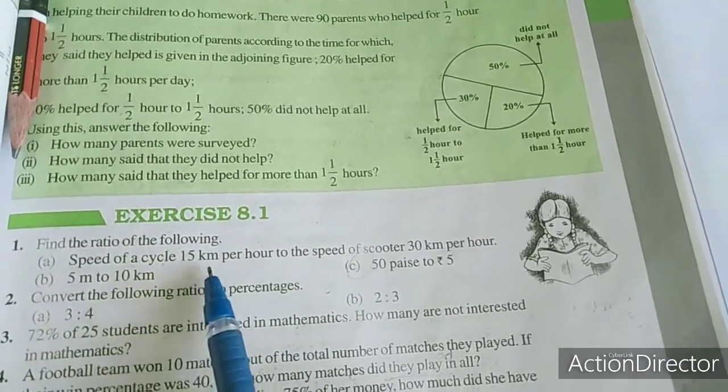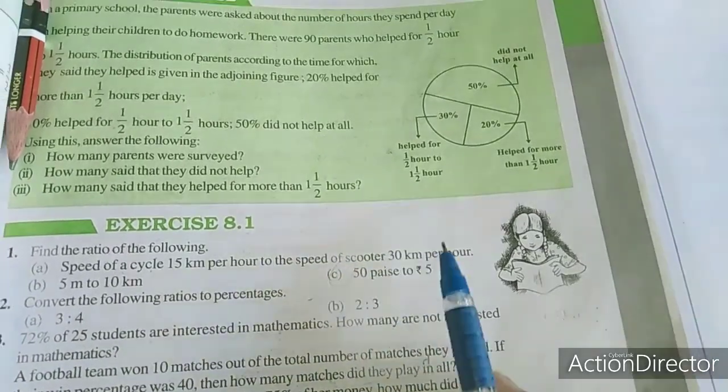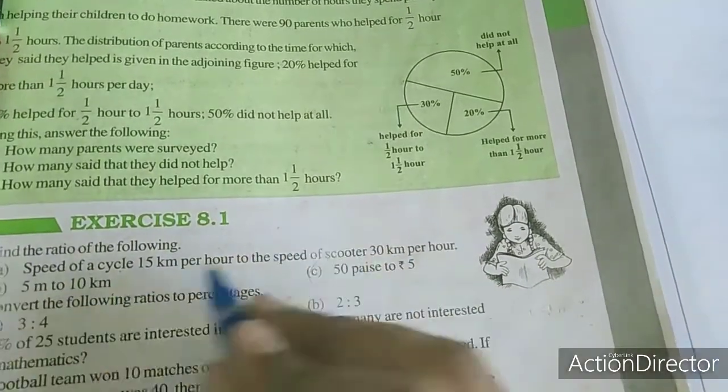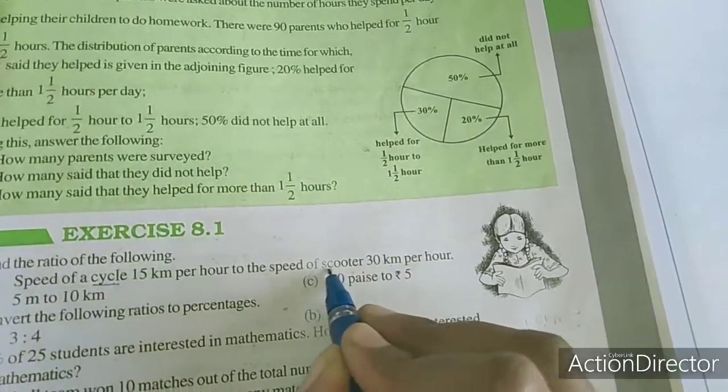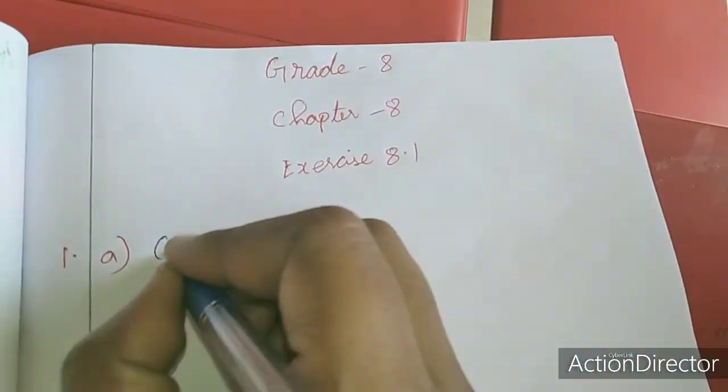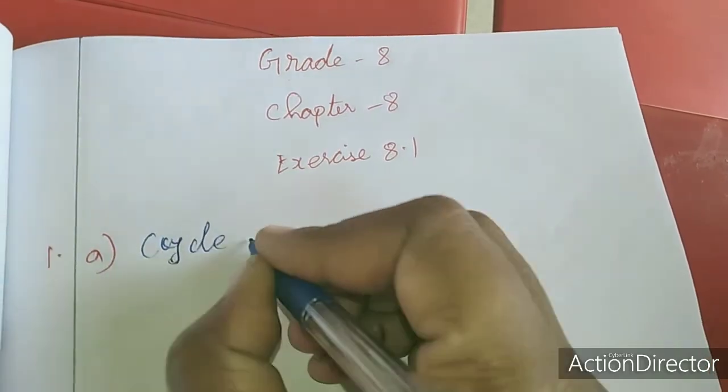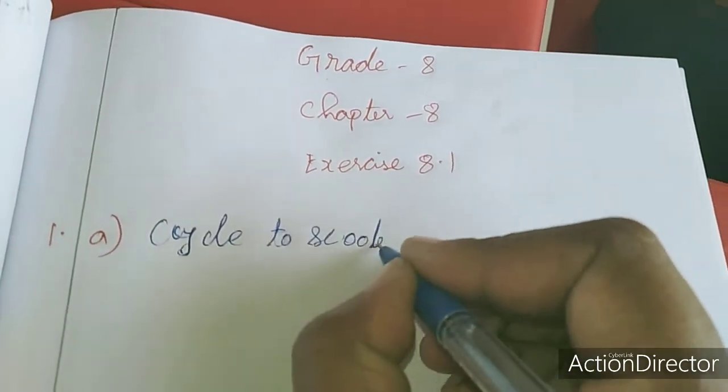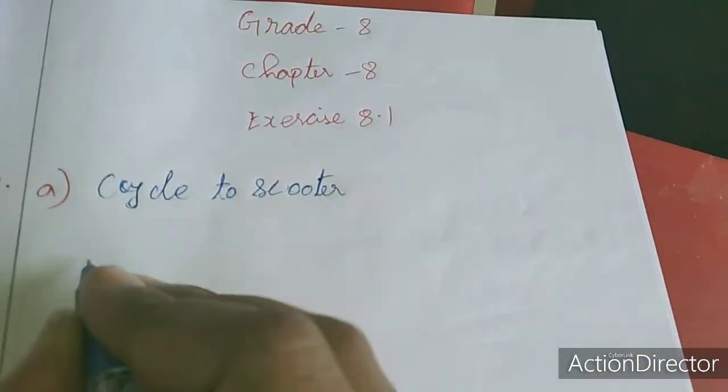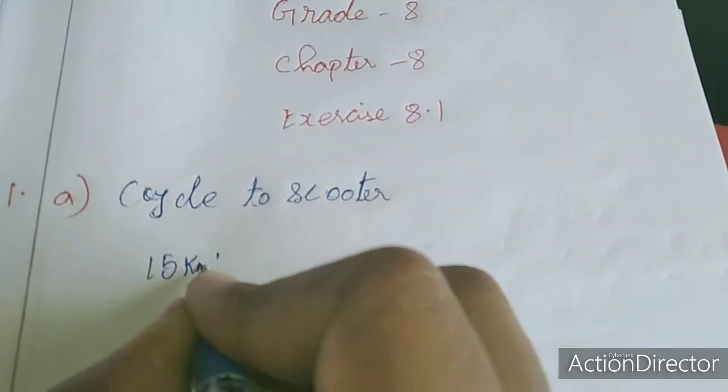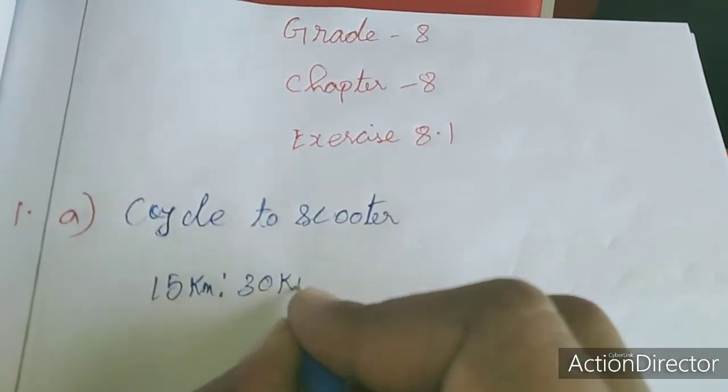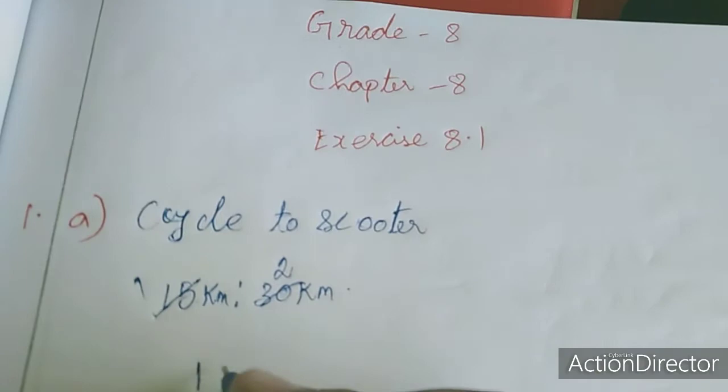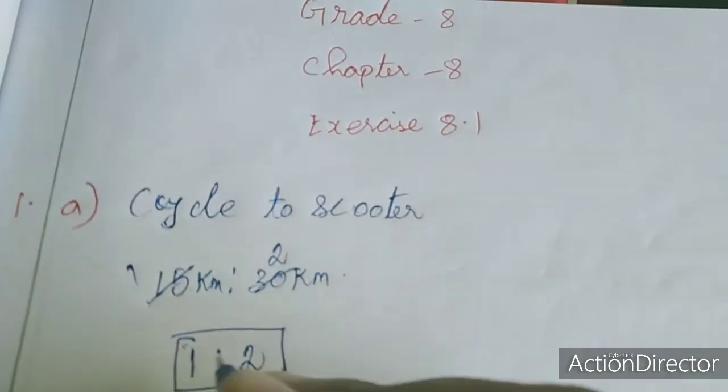See the first sum: speed of a cycle 15 km per hour to the speed of scooter 30 km per hour. We are going to write cycle to scooter. What is the speed of cycle? Cycle is 15, so 15 km. Speed of scooter is 30 km. Now I am cancelling this: 1 times 15 is 15, 2 times 15 is 30. So the ratio is 1 is to 2. Like that we want to find out the ratios.